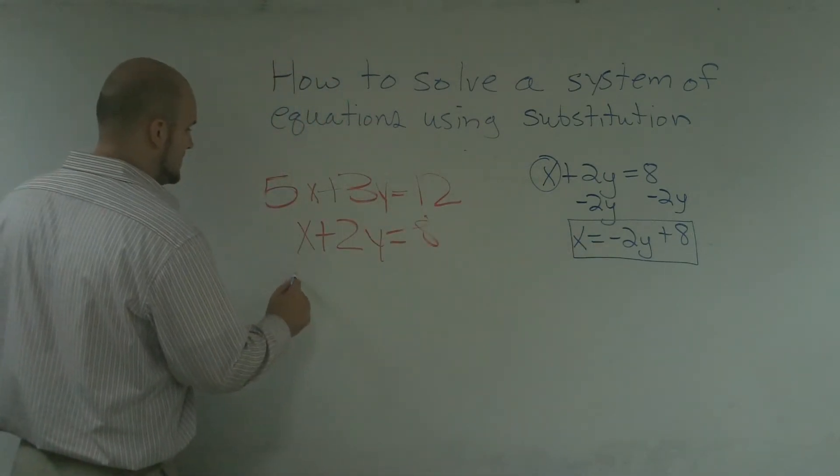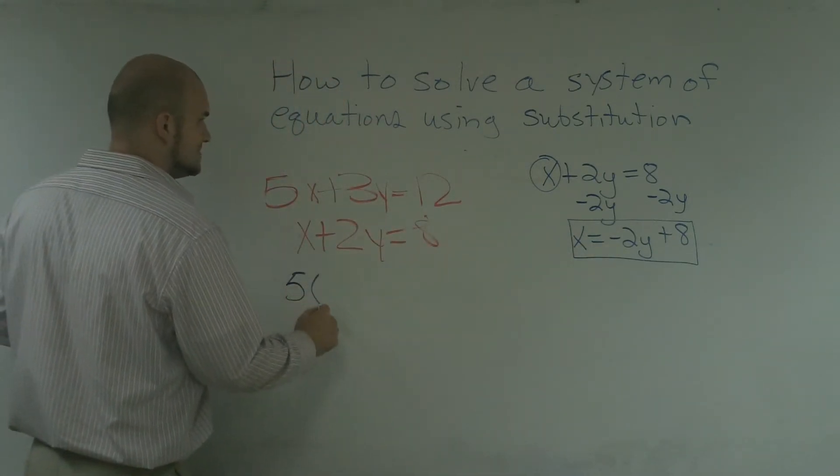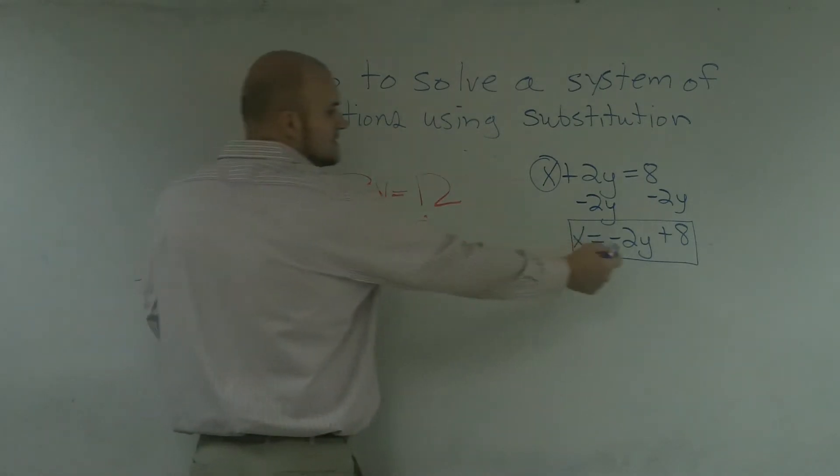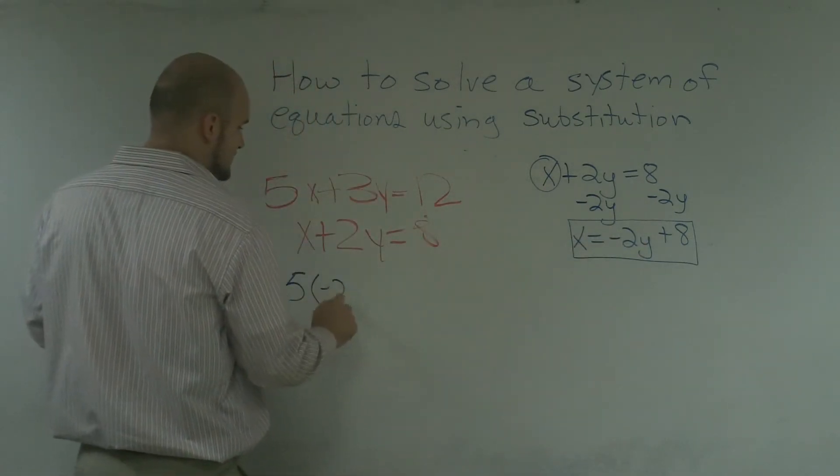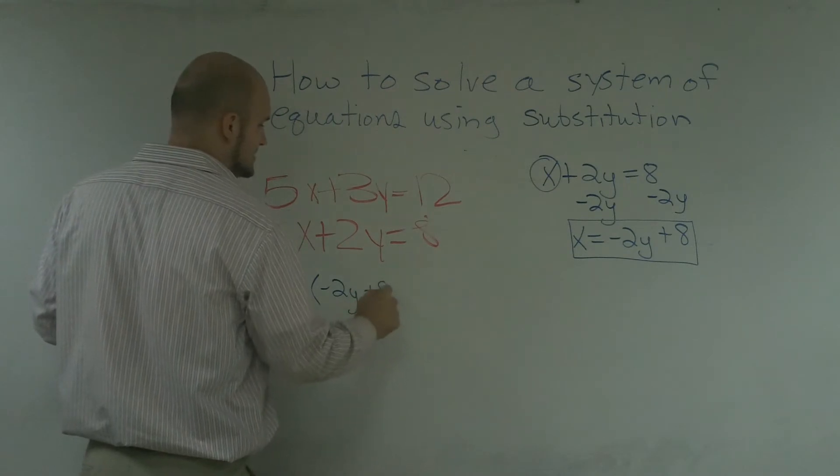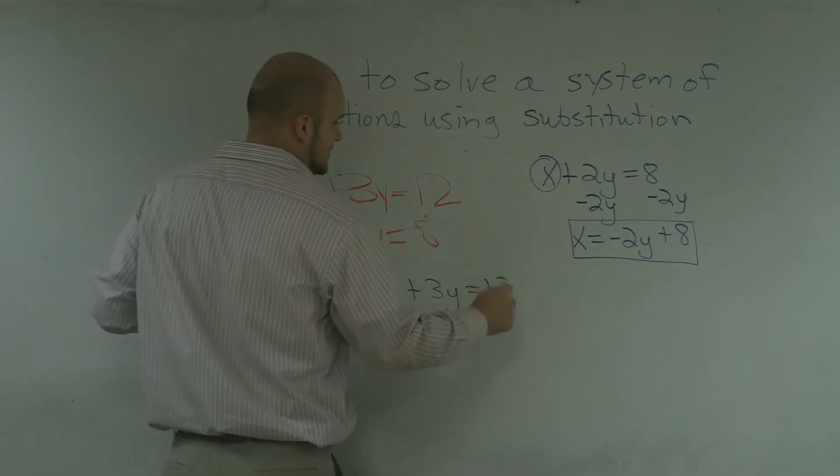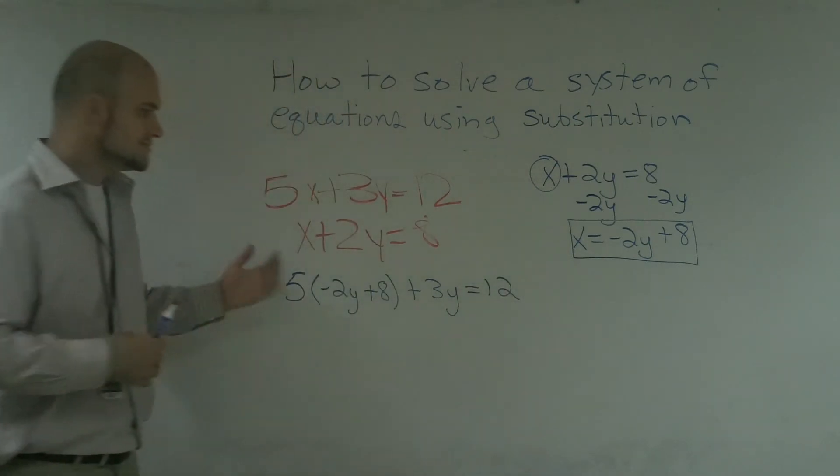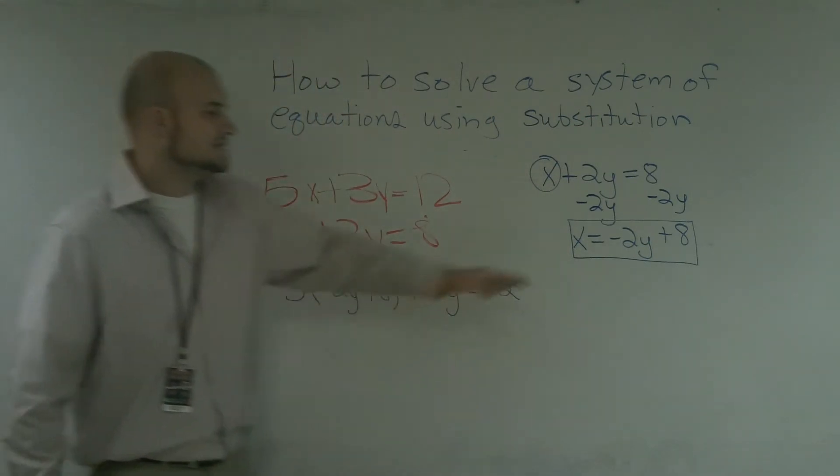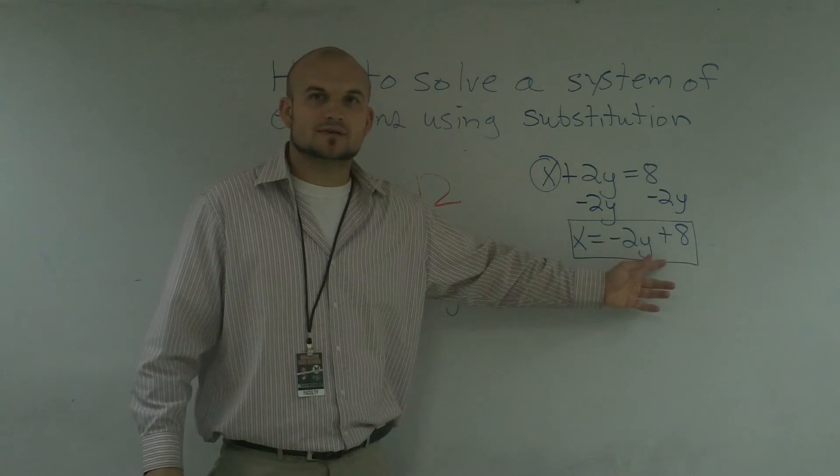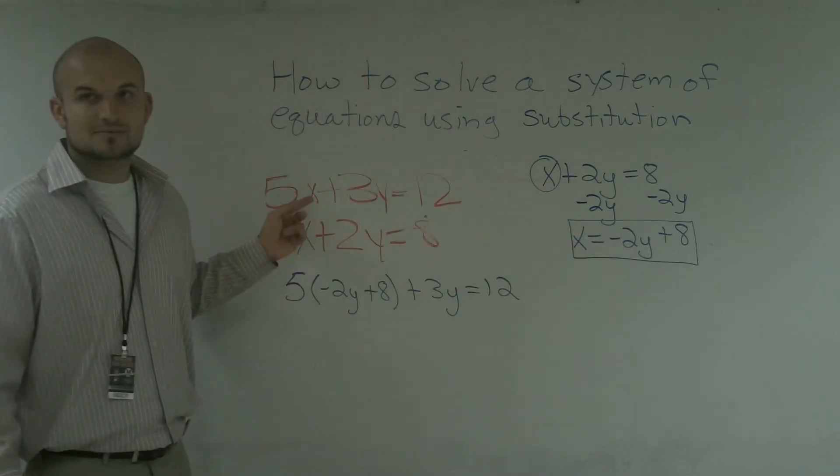So, now, I'm going to write 5 times, and rather than x, I'm going to say, what does x equal? Well, x equals a negative 2y plus 8 plus 3y equals 12. So, if you kind of look at what I just did, I took my original equation for this equation, and I plugged it into my first equation.